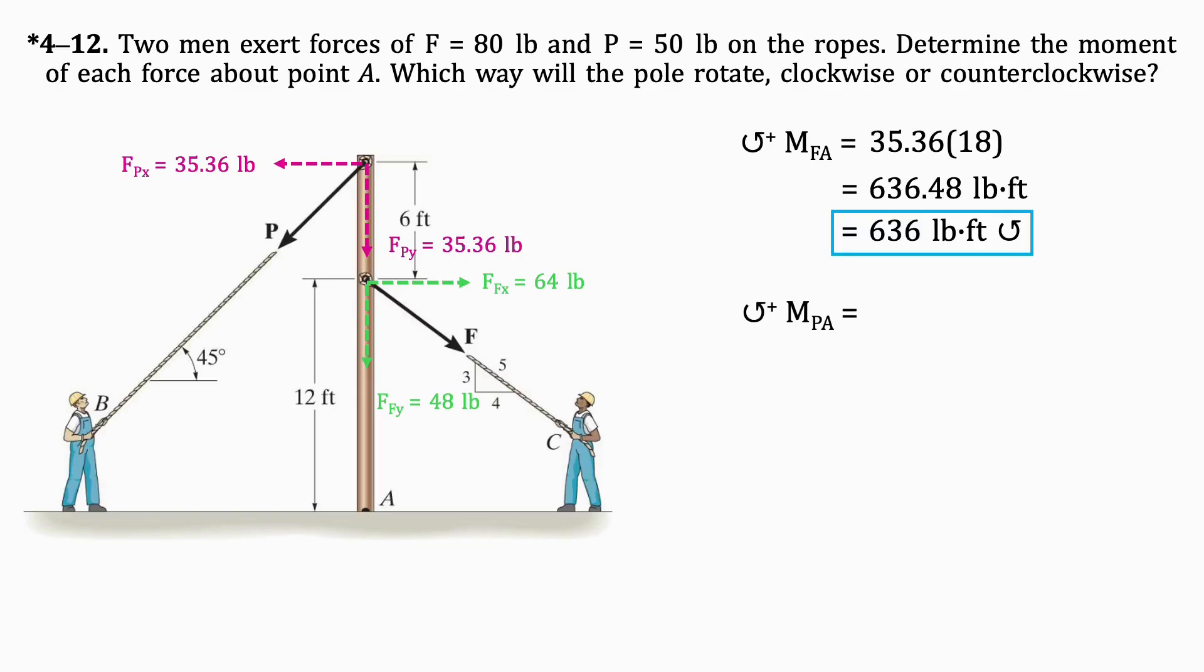Similarly to the first force, we will only consider the Y component of Fp when finding the moment of Fp about point A. Multiplying the Y component of the force by its distance from A, which is 12 feet, we get 768 pounds per foot in the clockwise direction.